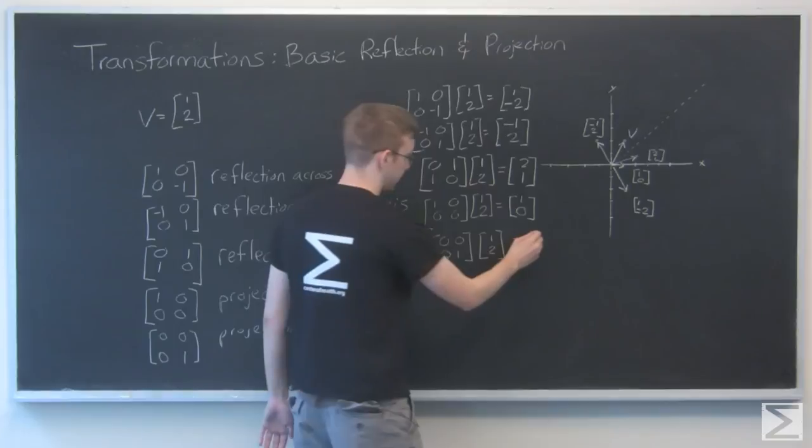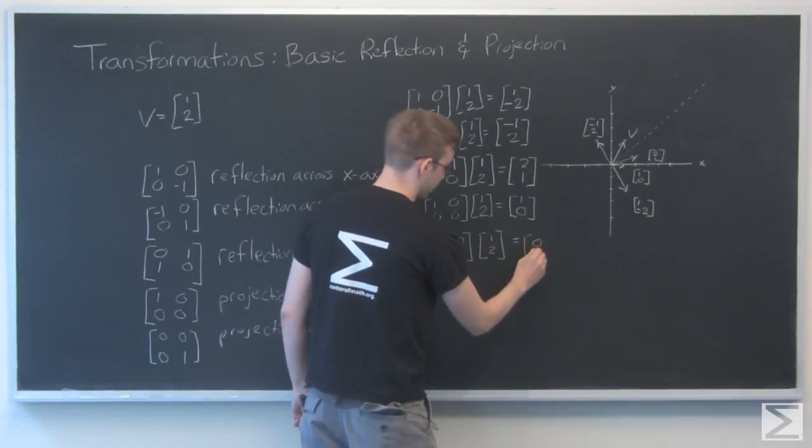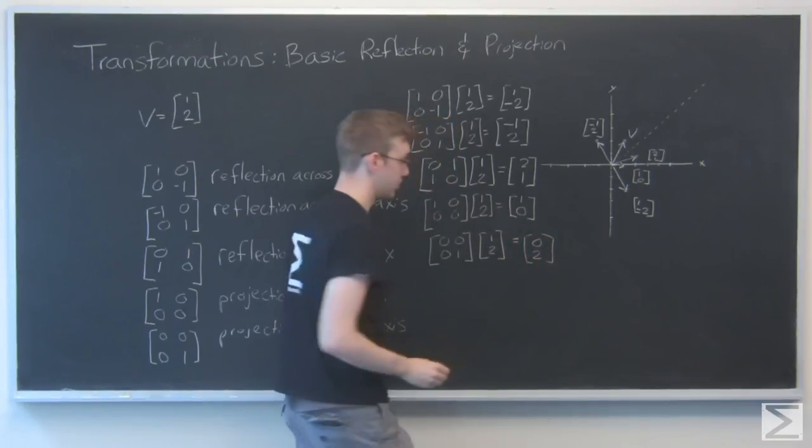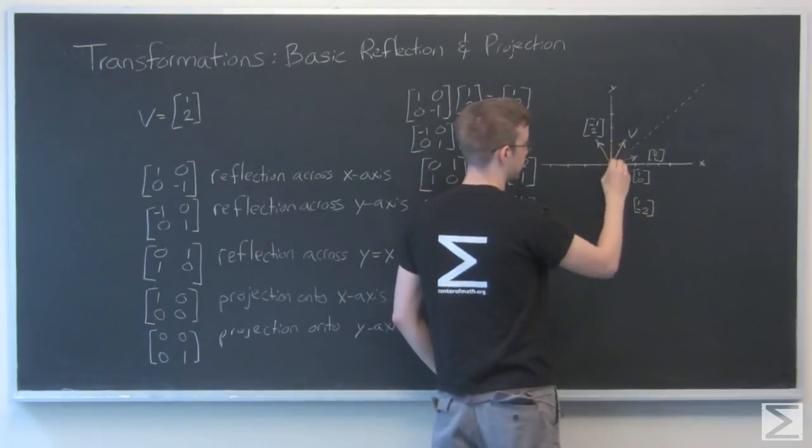So that's all 0s except for the bottom right. This will erase the top value and keep the second value the way it is. So we have 0, 2. If we plot that, it's this piece right here.